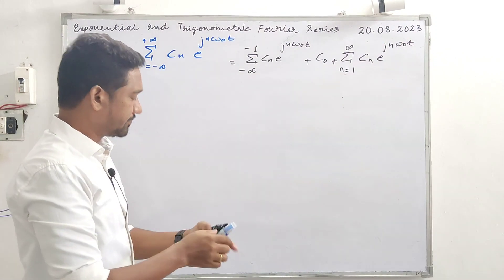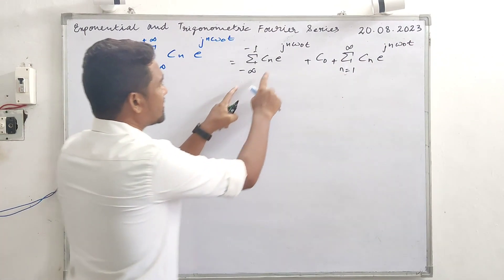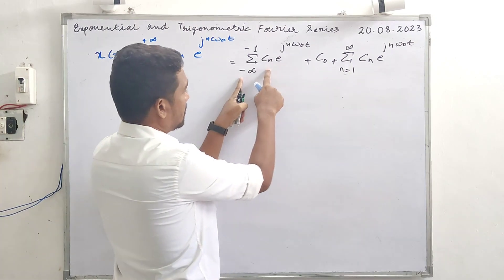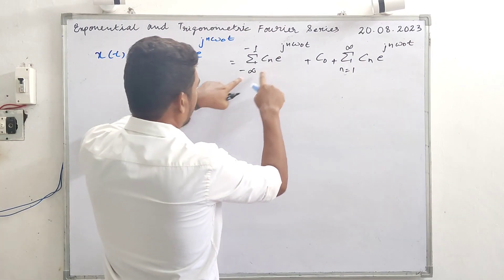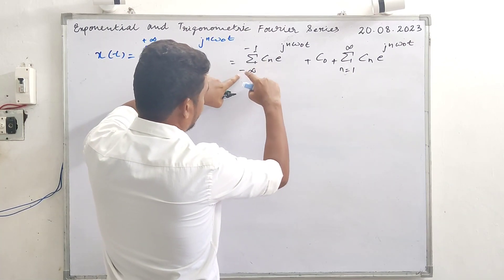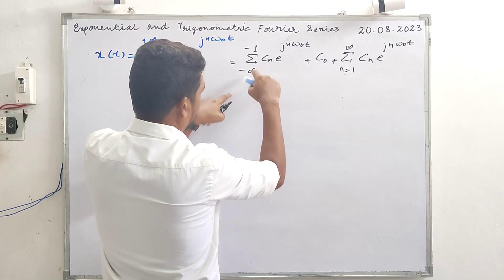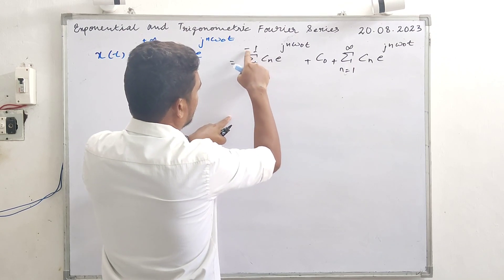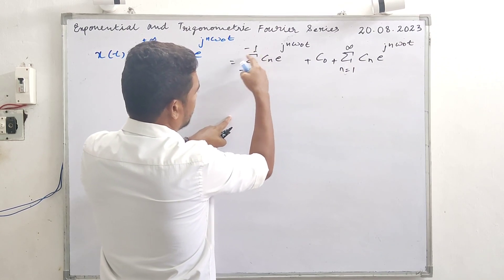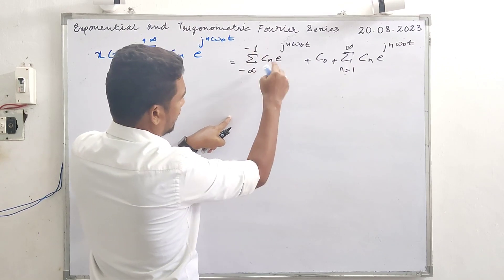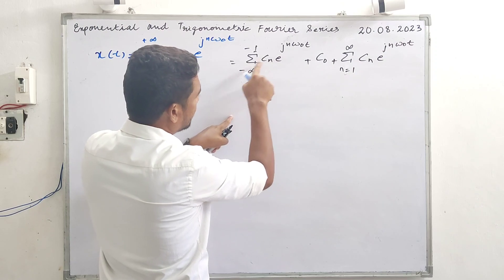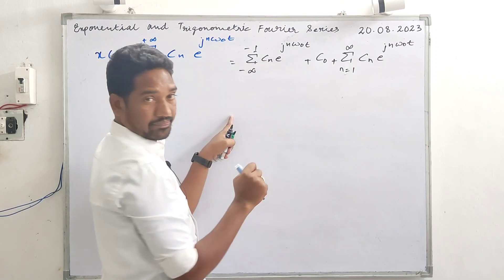So that is what we do — we do a little change here. For the negative side, where n equals minus 1, minus 2, and so on, we apply a substitution. This negative part is the key change we make.